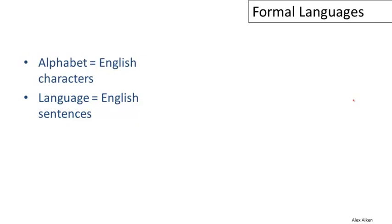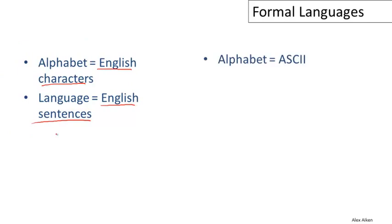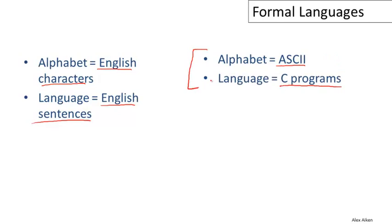An example of a language that you're familiar with is formed from the alphabet of English characters, and it is just the set of English sentences. This is not quite a formal language in that we might disagree on which strings of English characters are valid English sentences, but one could imagine defining rules that would make this fully formal. A more rigorous example would be picking the ASCII character set as the alphabet and the language to be the set of inputs that C compilers will accept.